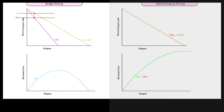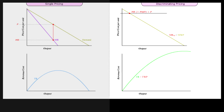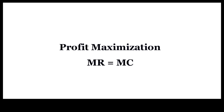Under single pricing, marginal revenue MR is less than price because price must be lowered for all units in order to sell just one more unit. Under discriminating pricing, MR — that is MWP — is equal to price because each unit is sold at a different price.